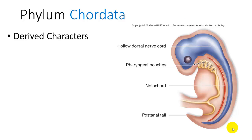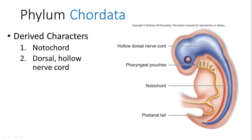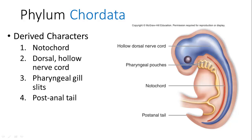Vertebrates belong to the phylum Chordata, which have four derived characters. First is a notochord, which is a stiffened rod around which your vertebrae develop. A dorsal hollow nerve cord, which is what your central nervous system develops from. Pharyngeal gill slits, which become various different bones and structures in different animals. And a post-anal tail, which is retained in some organisms but not in others.